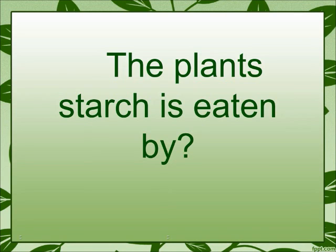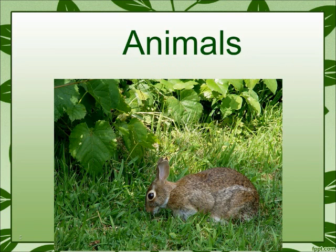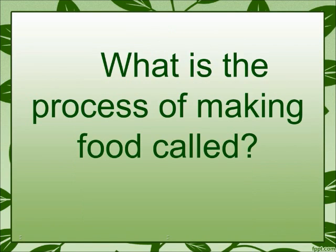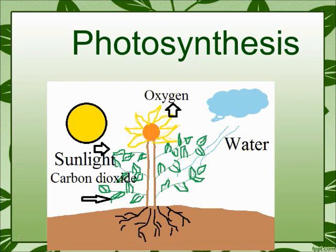The plant's starch is eaten by? Animals. What is the process of making food called? Photosynthesis.